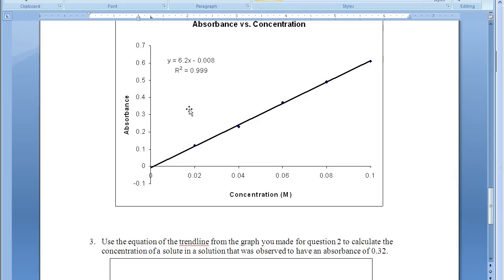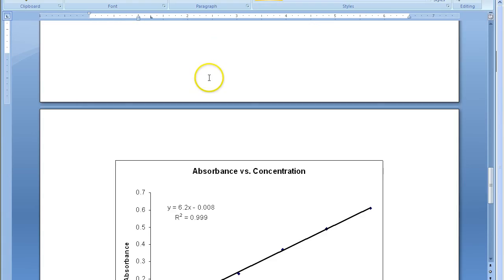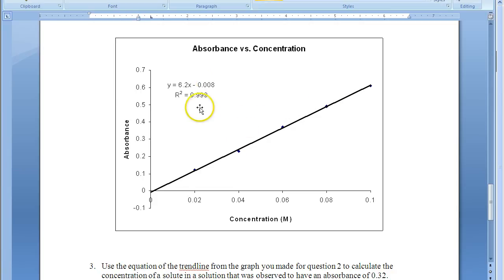So what you would be doing in pre-lab question two is using the data, putting these values for absorbance on the y-axis and the values for concentration on the x. Add the trend line showing the equation and the r squared. Always useful to see the r squared just to know how good your data set is, how much confidence you should have in any further results that you calculate out of it.